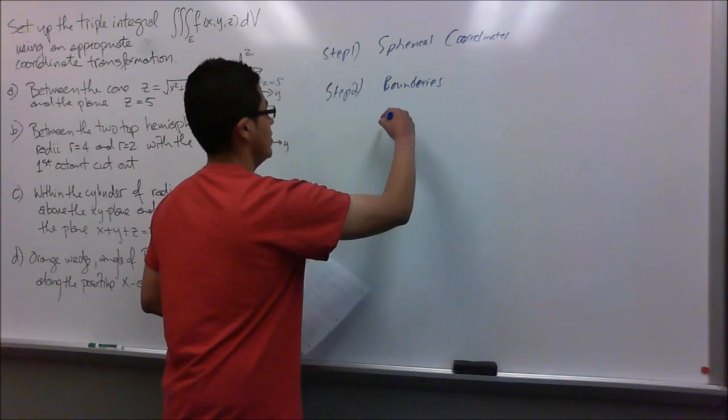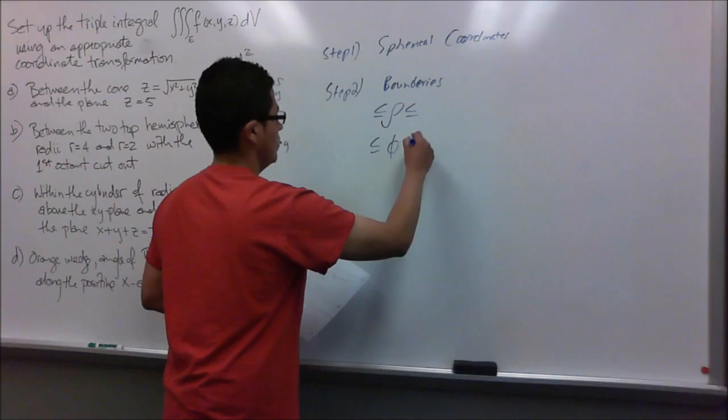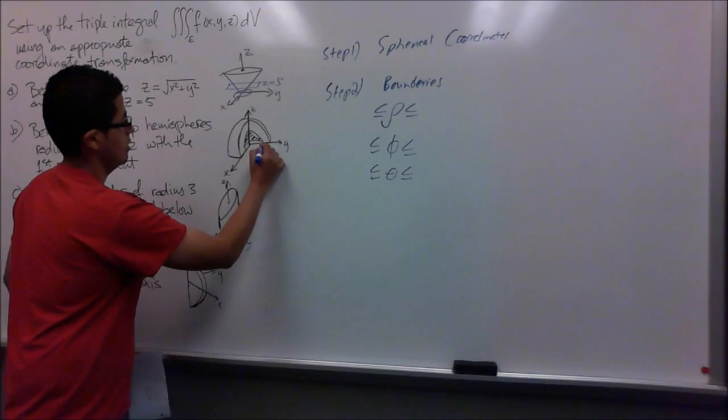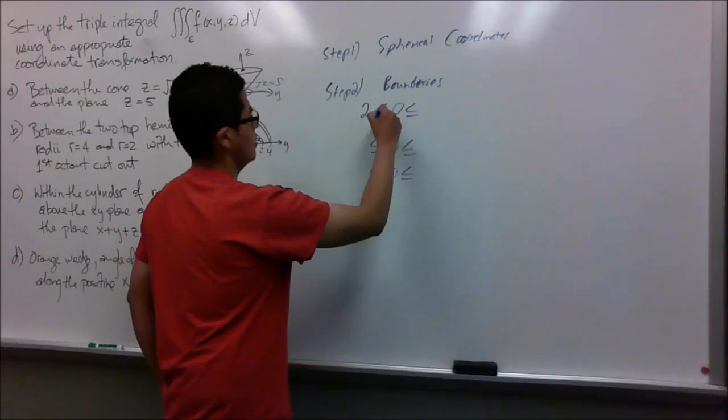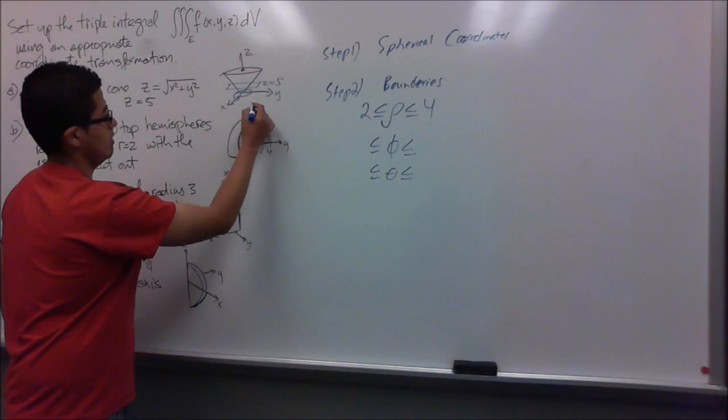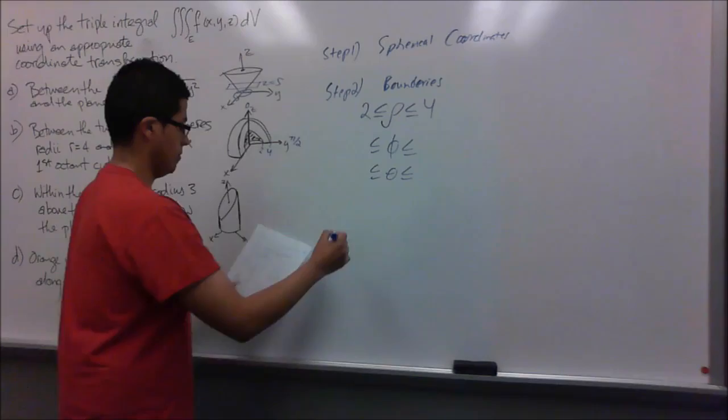Since we are using spherical coordinates, our boundaries will rely on rho, phi, and theta. Our radius goes from 2 to 4, so the lower limit is 2 and the upper limit is 4. Phi is the angle from the positive z-axis, so it starts at 0 and goes all the way down to pi over 2.